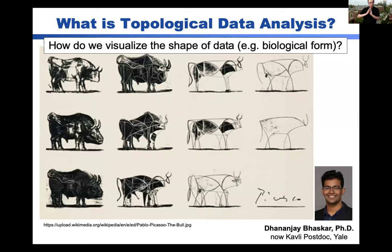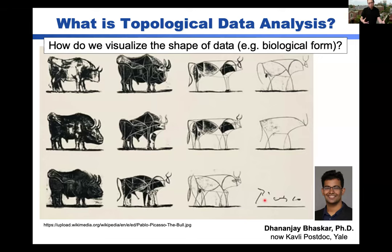I'll motivate this with a historical picture by Pablo Picasso. This is all the work of a very talented former grad student, Andre Baskar, who's now at Yale. He's interested in this idea of how we might be able to visualize the shape of multidimensional data, and especially as a way to understand biological form.